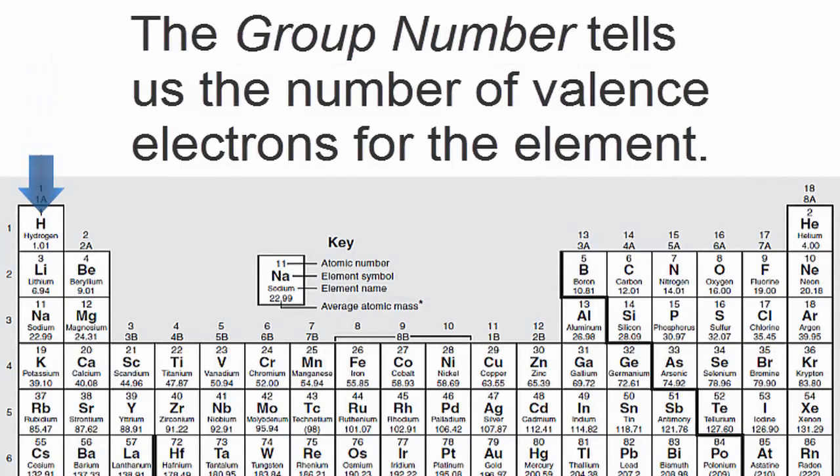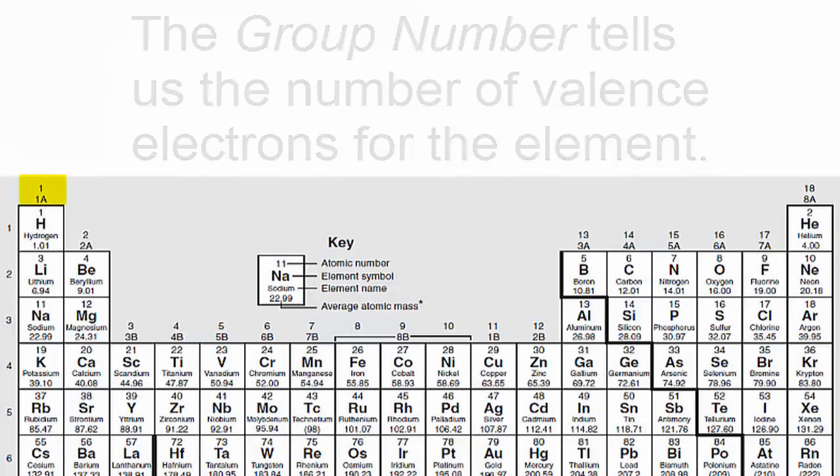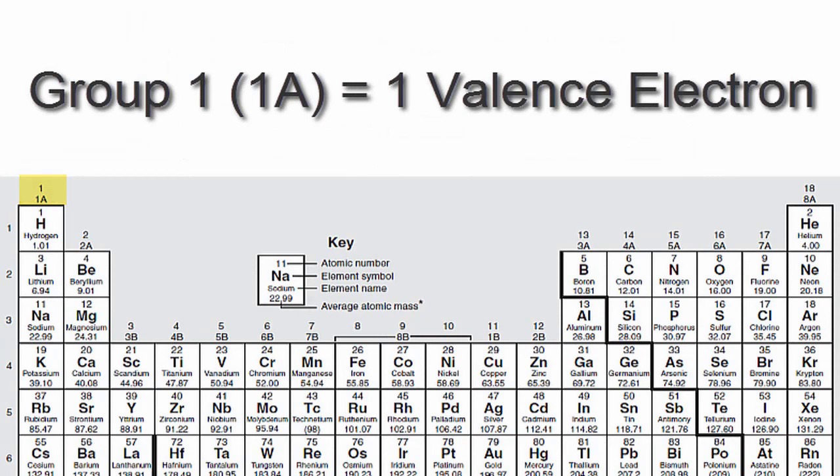For example, hydrogen has one valence electron because it's in group 1, sometimes called 1A.